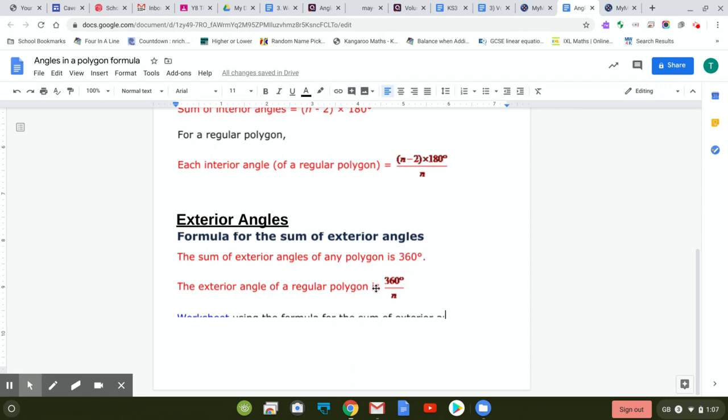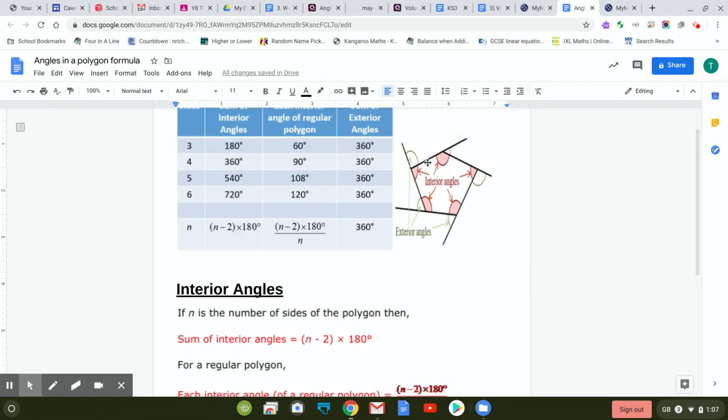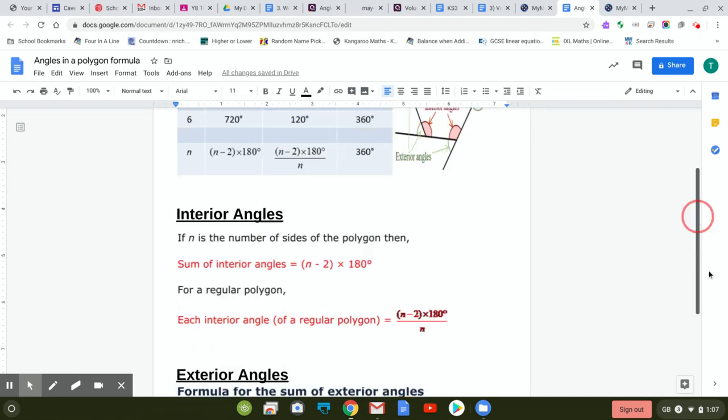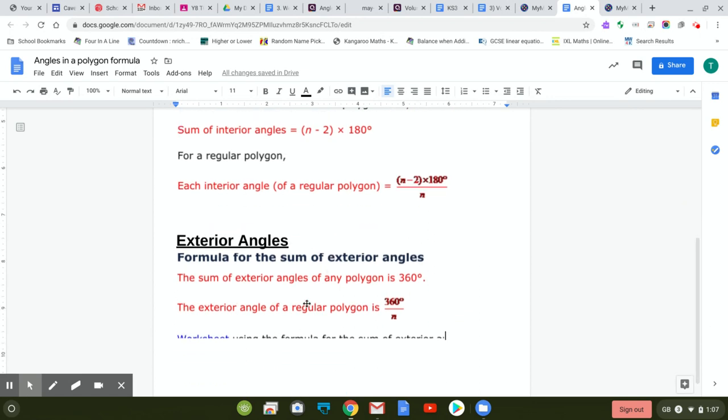For example, this question—this is a pentagon, so it should total 360 on the outside. If it's a regular pentagon, 360 divided by 5 will give you one of the angles. So 360 divided by the number of sides gives you one of the exterior angles for regular polygons.